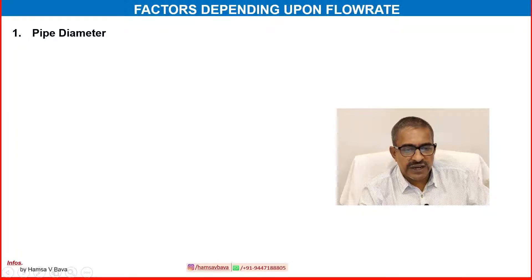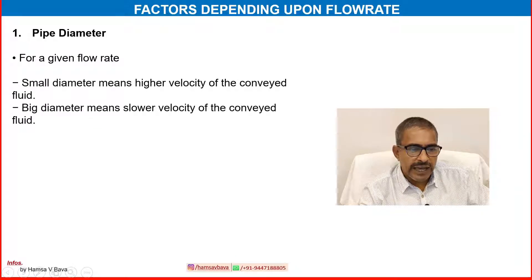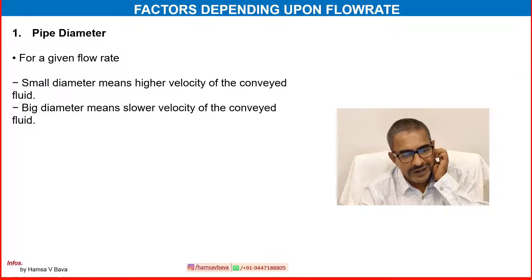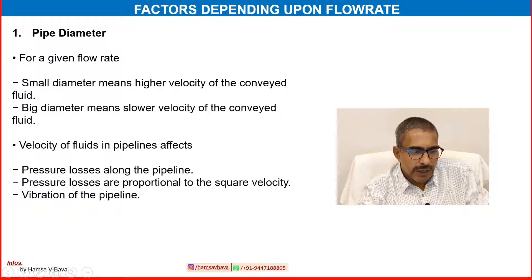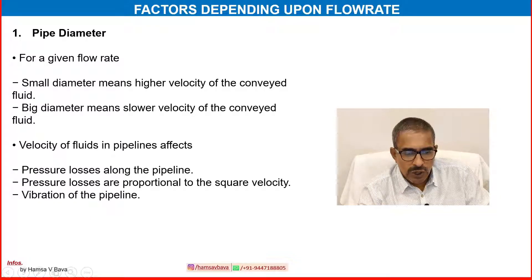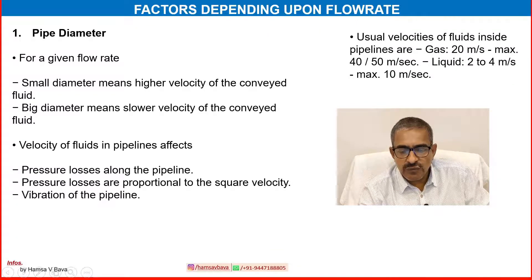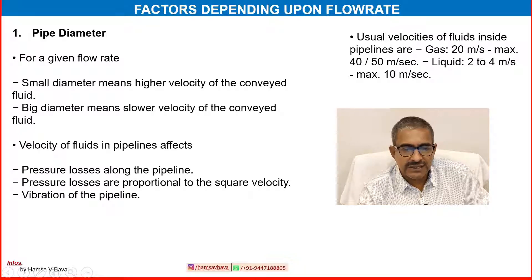Factors depending upon flow rate — one is pipe diameter. For a given flow rate, small diameter means higher velocity of the conveyed fluid, and big diameter means lower velocity. Velocity of fluid in a pipeline affects pressure losses along the pipeline; pressure losses are proportional to the square of velocity, and also affect vibration of the pipeline. Usual velocities inside pipelines are: gas — 20 m/s, maximum 40 to 50 m/s; liquid — 2 to 4 m/s, maximum 10 m/s.